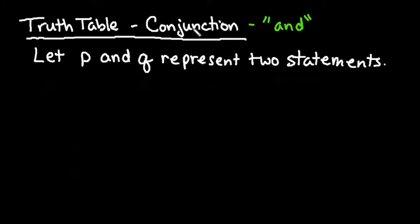So if I have something like the grass is green and the sky is blue, that would be an example of a conjunction.